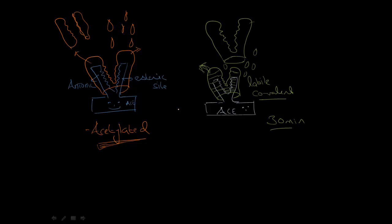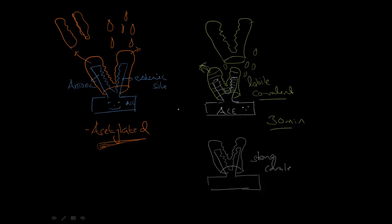After about 30 minutes, drugs like neostigmine or physostigmine can be broken down and the acetylcholinesterase will be free again. Now for irreversible anticholinesterases — the problem is that they bind to acetylcholinesterase and make a strong covalent bond. This strong covalent bond can take up to a week to free the acetylcholinesterase. The only way to free it is to give drugs called oximes, which work on the acetylcholinesterase and can pull off the phosphate groups.